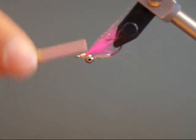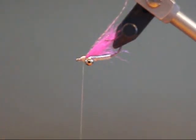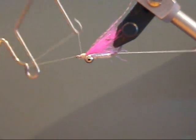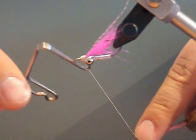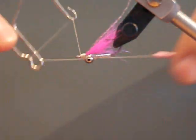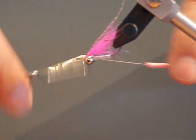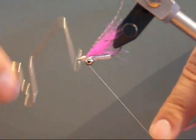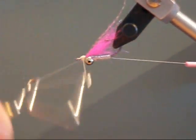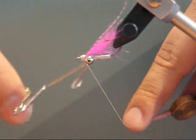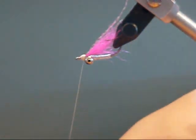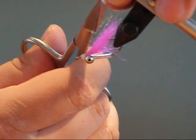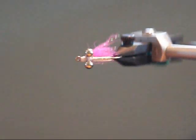Now for those believers that think that head cement will affect the bonefish from taking your Crazy Charlie because of the scent, put in a number of whip finishes. As you can see here I will create about three whip finishes. Trim out the crystal flash, and there you have it, Crazy Charlie. Tight lines and wade safe.